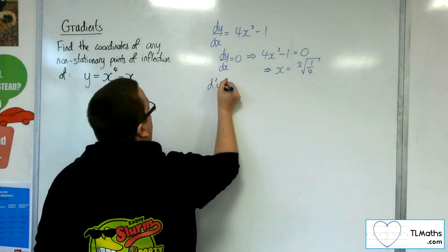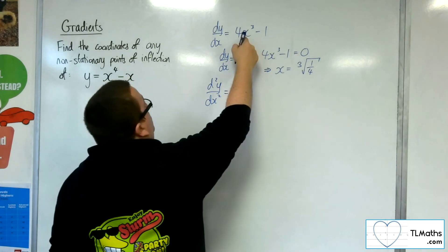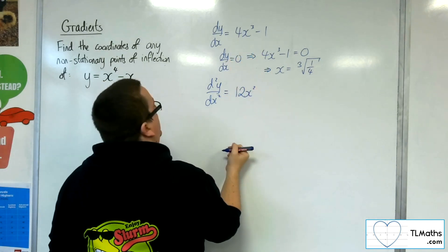So now the second derivative, find that, so that would be 12x squared.